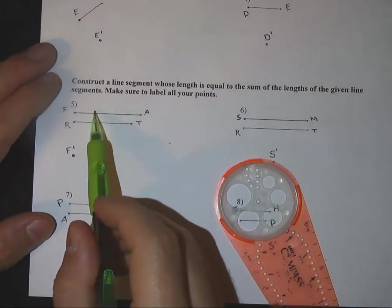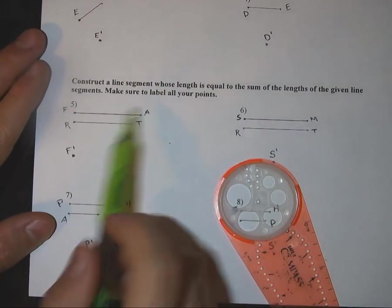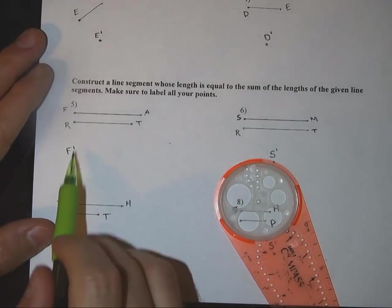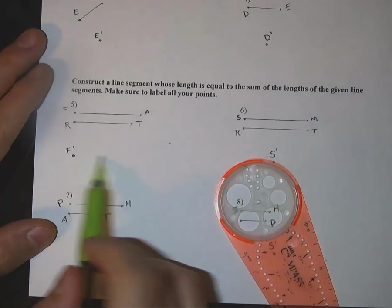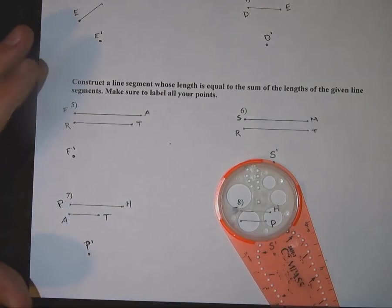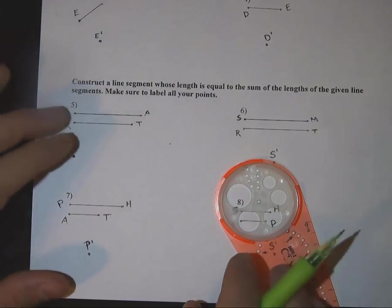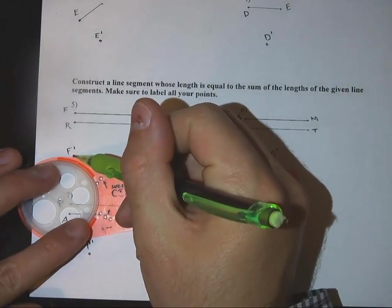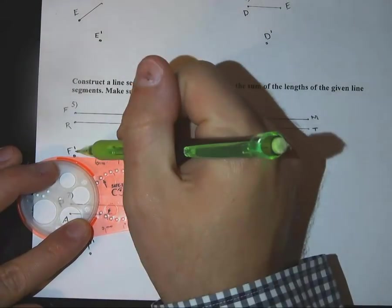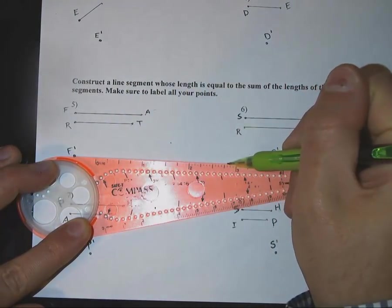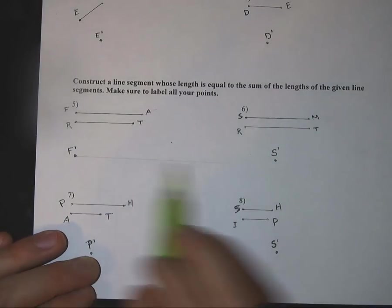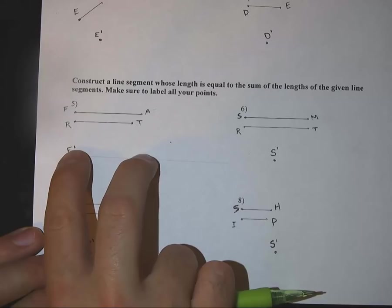Again, I have two segments here in number 5. I have the segment FA and then the other segment is RT. And I want to copy both of these down onto F prime and have a straight line. Again, the first part of copying two segments together and making a sum out of them is to start with a straight line. So I'm going to go to F prime here and just make a straight line and just make it long enough. Okay, so we have a straight line here. We're going to use that to put FA on there and then RT.